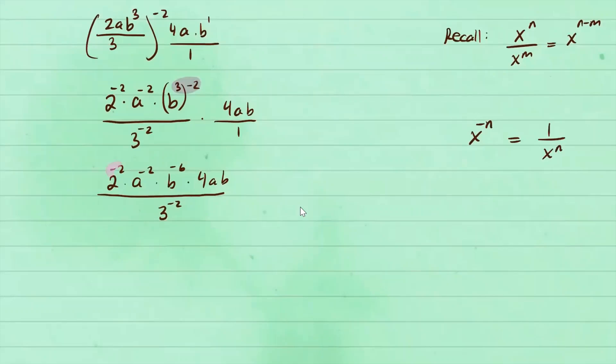Which means these are going to move on the bottom. And similarly, this will move on top so that the exponents are positive.